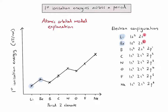Now let's consider beryllium and boron — this is the first exception to our general trend. The outer electron in beryllium is in the 2S sub-level, but in boron, the outer electron is in the 2P sub-level. Since the 2P sub-level is higher energy than the 2S sub-level, we can treat it as being further from the nucleus, which decreases the electrostatic attraction between that electron and the nucleus. So it actually becomes slightly easier to remove than the outer electron in beryllium, even though boron has one more proton. The experimental data shows that the 2P sub-level is far enough away to reduce the electrostatic attraction significantly.